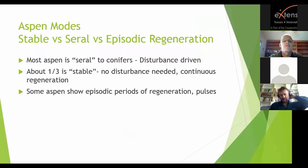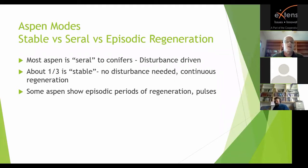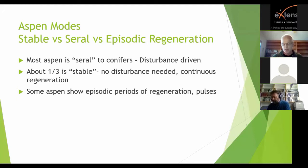Aspen has three different modes of regeneration: stable, seral, and episodic. I just described the seral condition — disturbance driven after a fire — and that's what most people are familiar with. But surveys have found that about one-third of Aspen is actually stable, where there are no competing conifers and disturbance is not needed, with a continuous mode of regeneration. Some Aspen shows an episodic pattern of regeneration, where regeneration occurs in pulses.